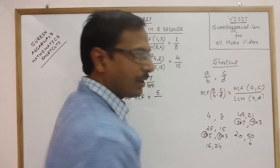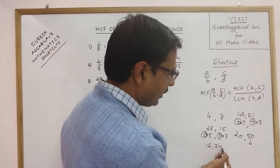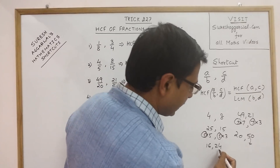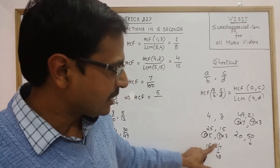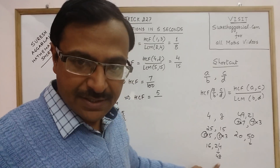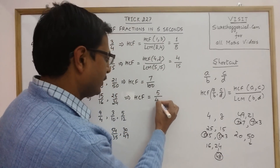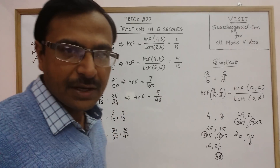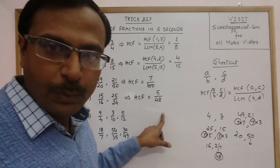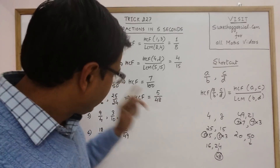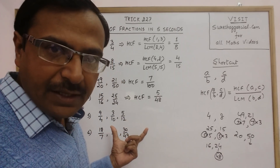Now for the denominators: 16 does not divide 24 exactly, so take multiples of 24. The next multiple is 48, and 16 divides 48 exactly, so 48 is the LCM of the denominators. Therefore the HCF of these two fractions is 5/48.